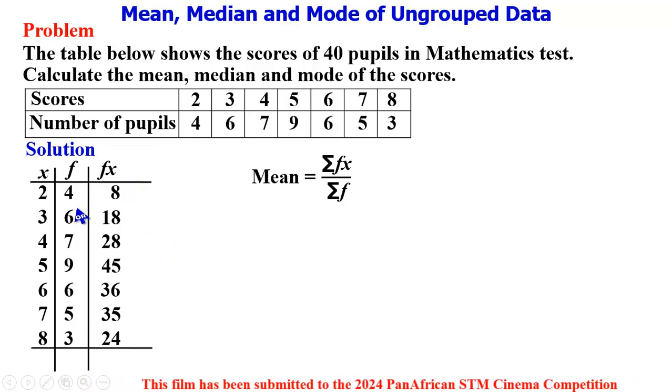To add, we have 10, 17, 26, 32, 37, and 40, so we have 40 as sigma f. Then for these we have 8 plus 18 plus 28 plus 45 plus 36 plus 35 plus 24.